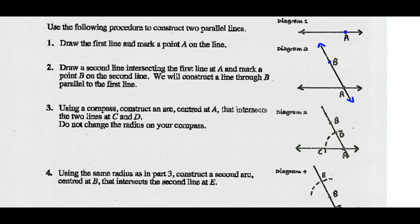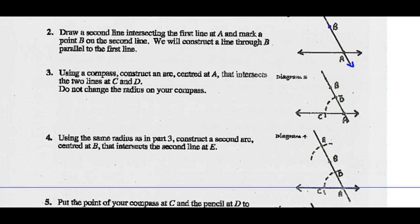Remember, the line that contains A is our first line. Using the compass, construct an arc centered at A that intersects the two lines at C and D. We're just going to use our compass and draw that arc. Don't change the radius of this compass — whatever radius we used to draw that arc, we're now going to center it at point B and draw the exact same arc right there.